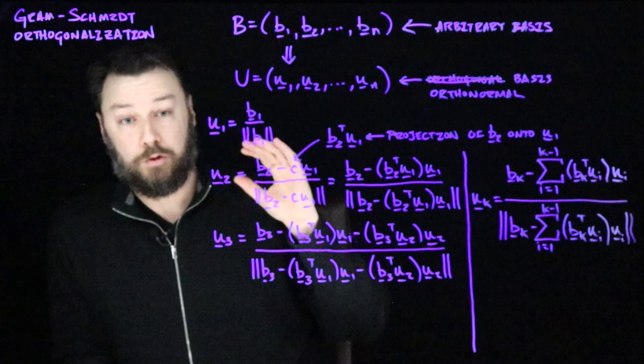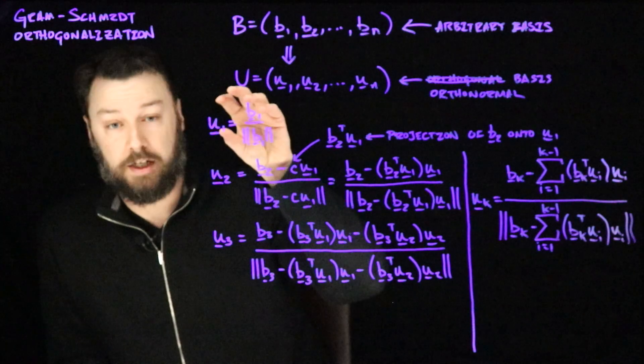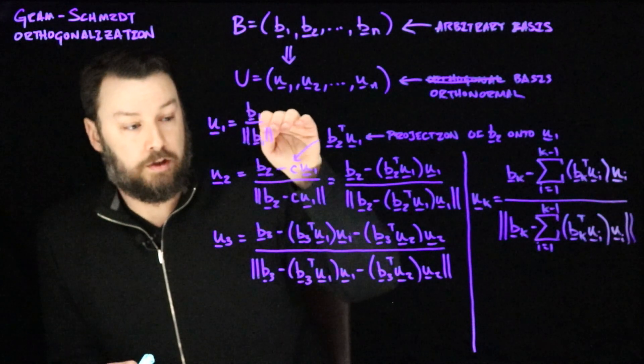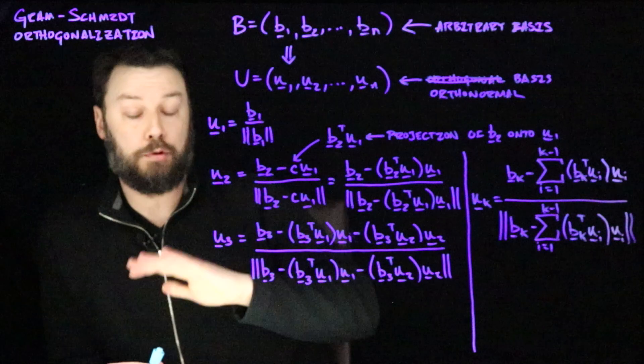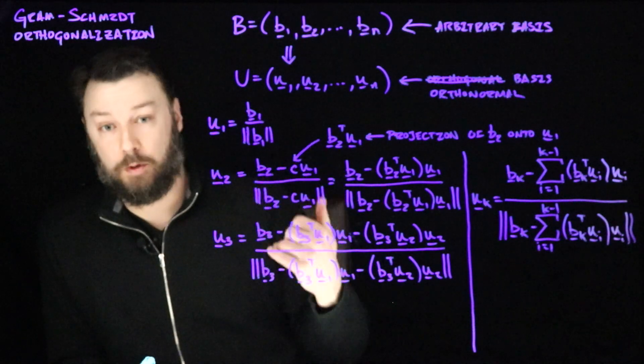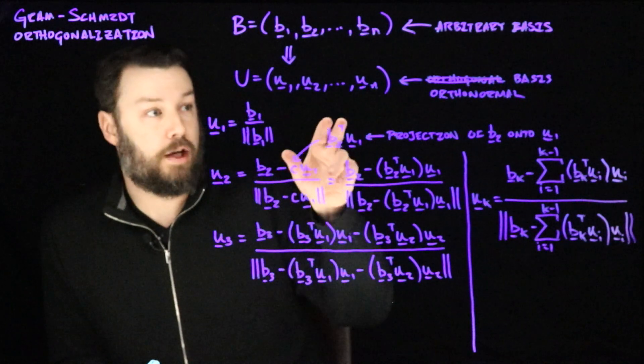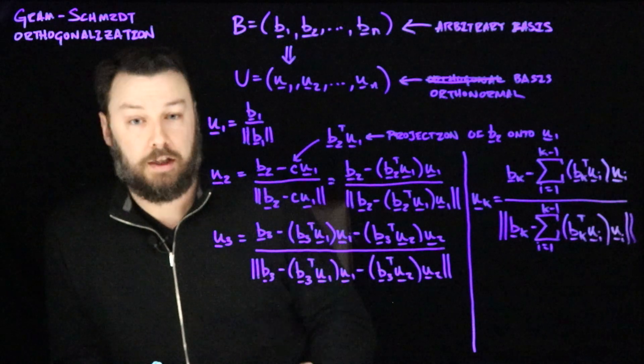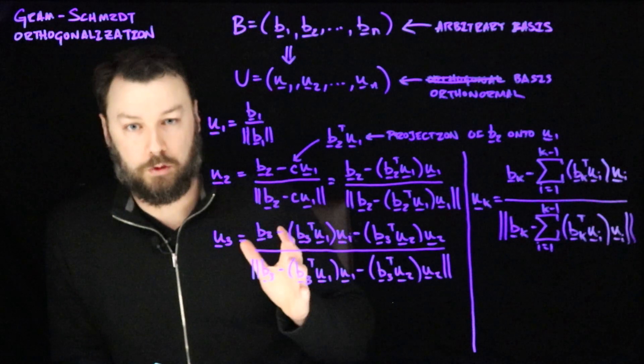So again, greedy procedure. We start by just normalizing the first b1, and then we're adding in new b's, removing the effect of previous values, and then normalizing. And we do that until we've processed all n of the b's. And now we have a set of u's that are an orthonormal basis.